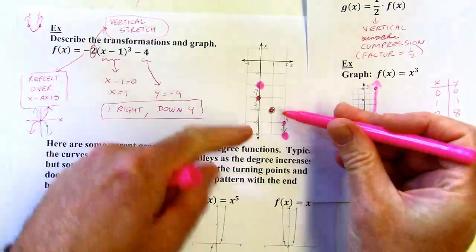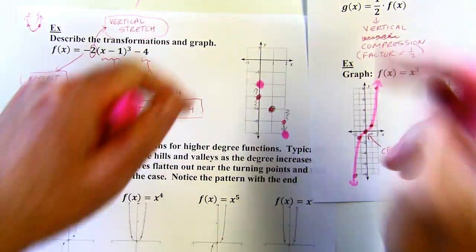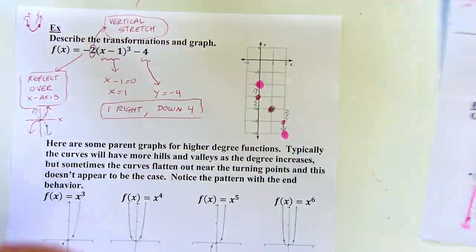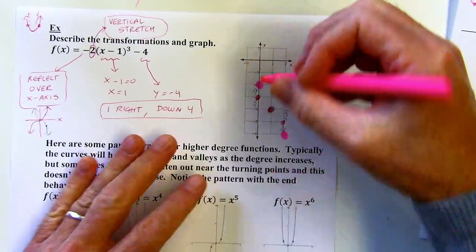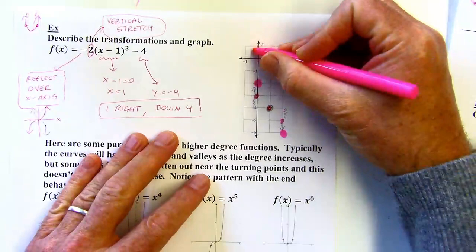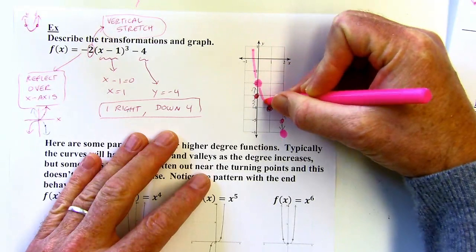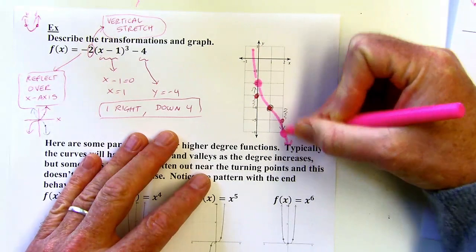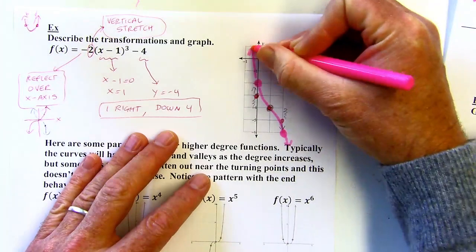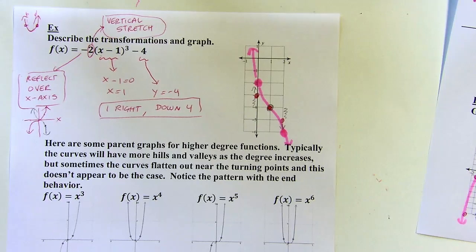Not two more units, but now these pink points are two units from the center as opposed to one unit from the center. And then I can draw in my graph. It takes a little getting used to drawing these S-curves, but the more of them you do, the more used to it you'll get. It should look something like that.